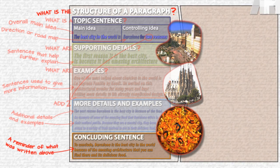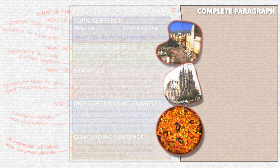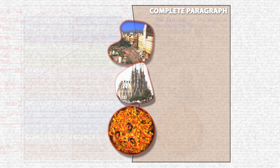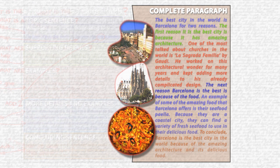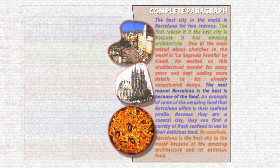So, what does our paragraph look like? The best city in the world is Barcelona for two reasons. The first reason it is the best city is because of the amazing architecture and its delicious food.